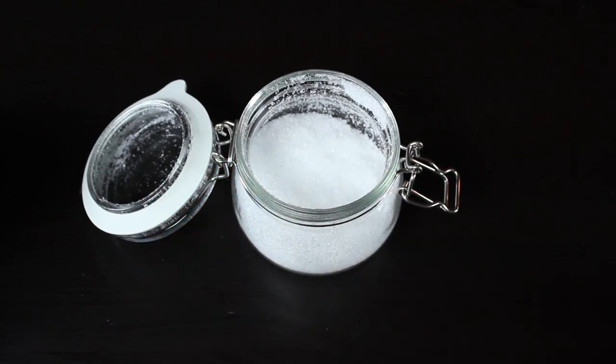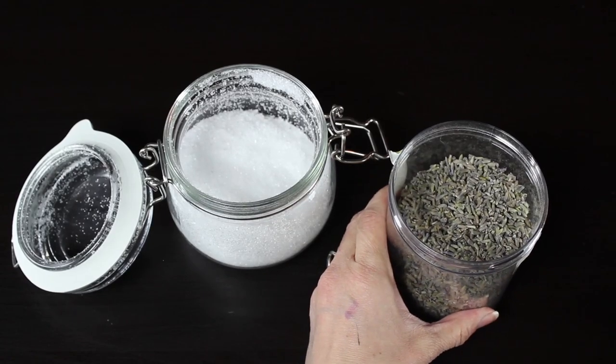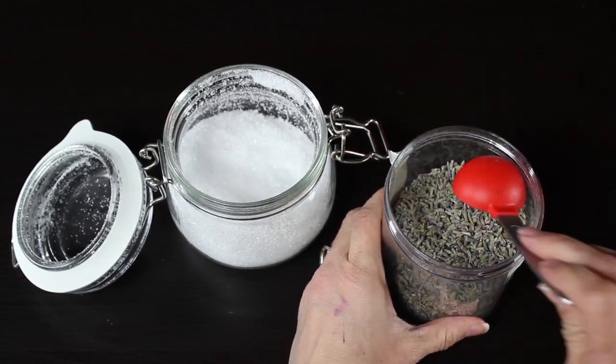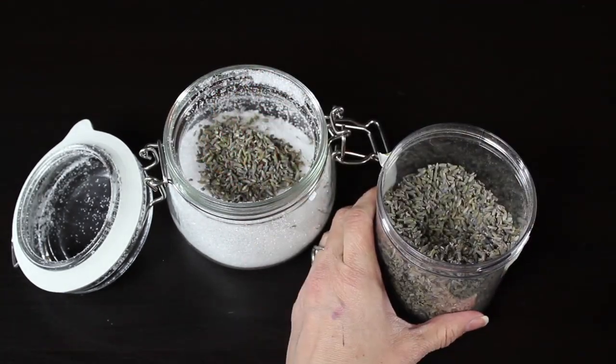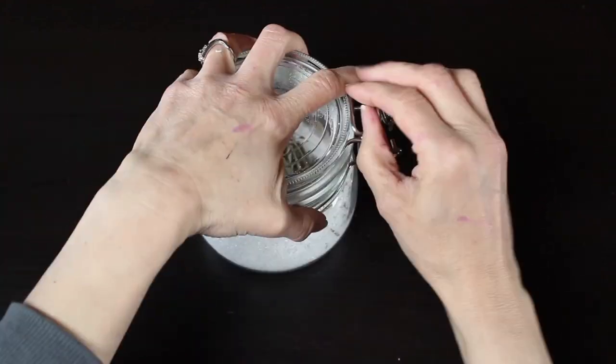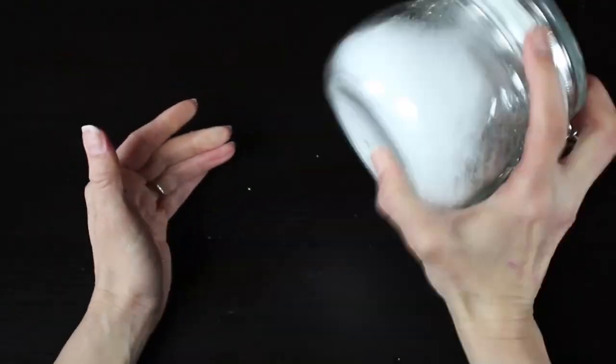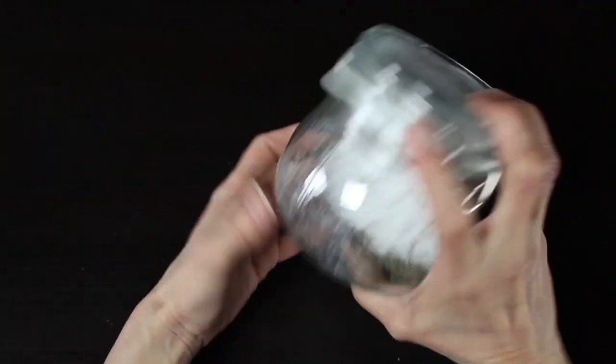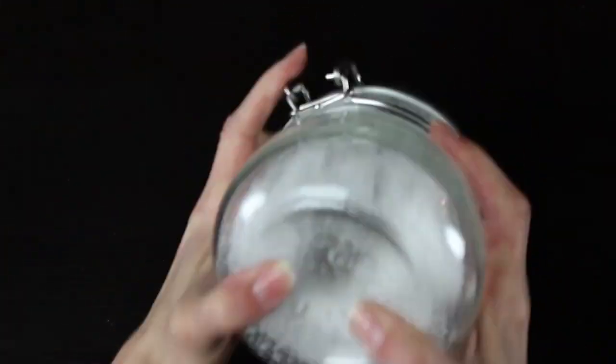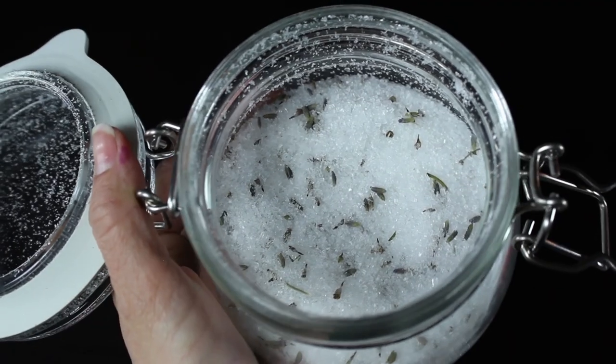and now we're going to add some of our lavender buds. And it's already starting to smell so beautiful. So I'm actually going to add a tablespoon of my lavender buds. And you can add a little bit more or a little bit less. I was amazed at how much these spread through my Epsom salts. So you really don't need a whole lot more than a tablespoon. And give it a good shake, mixing your Epsom salts and your lavender buds together.